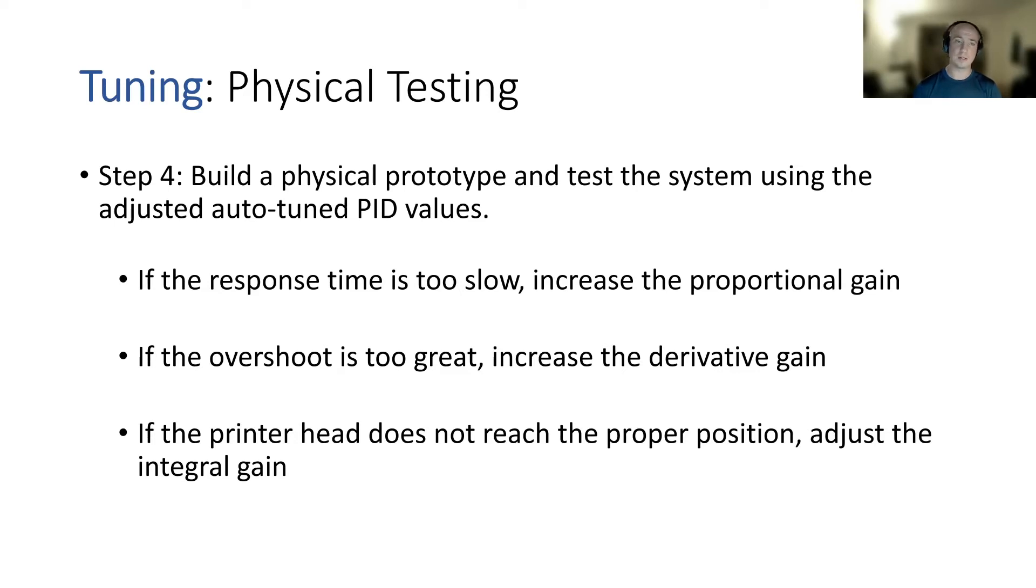If the carriage reaches its destination too slowly, increase your proportional gain on your PID controller. If your carriage overshoots its target and has to come back to reach the proper position, increase your derivative gain. And then if your printer head does not reach the proper position once it's at steady state, you're going to need to adjust the integral gain.